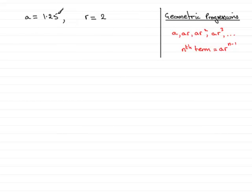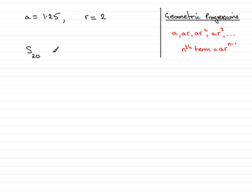In this part, we've already established that the first term A is 1.25 and the common ratio is 2. We're asked to find the sum of the first 20 terms, often denoted by S20, the sum of the first 20 terms of this geometric series.